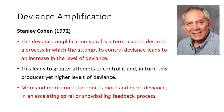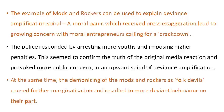Next, we need to consider the work of Stanley Cohen, who identified the process of deviance amplification and the deviancy amplification spiral. The deviancy amplification spiral is a term used to describe a process in which the attempt to control deviance actually leads to an increase in the overall level of deviance. This leads to greater attempts by the state and social control agencies to control it, which in turn produces yet higher levels of deviance. More and more control therefore produces more and more deviance, in an escalating spiral or snowballing feedback process.